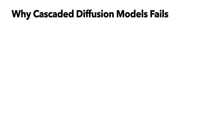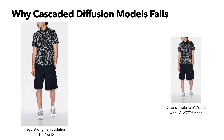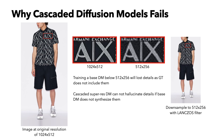Our key observation to this problem is the cascaded diffusion models used in Tryon Diffusion are destructive to detail preservation. So why does the cascaded diffusion model fail to preserve the details? I provide a simple example to demonstrate it. On the left, I show an image at its original resolution at 1024 by 512. Then I downsample this image by two times using some anti-aliasing filters. By looking at the same area in these two images as highlighted by the red boxes, we can see that just by downsampling the image by a factor of 2, the high-frequency details got blurred out. This example tells us that training a base diffusion model below 512 by 256 will lose details as the ground truth does not include them. Furthermore, in our early experiments, we noticed that cascaded super-resolution diffusion models cannot hallucinate details if the base diffusion model does not synthesize them.